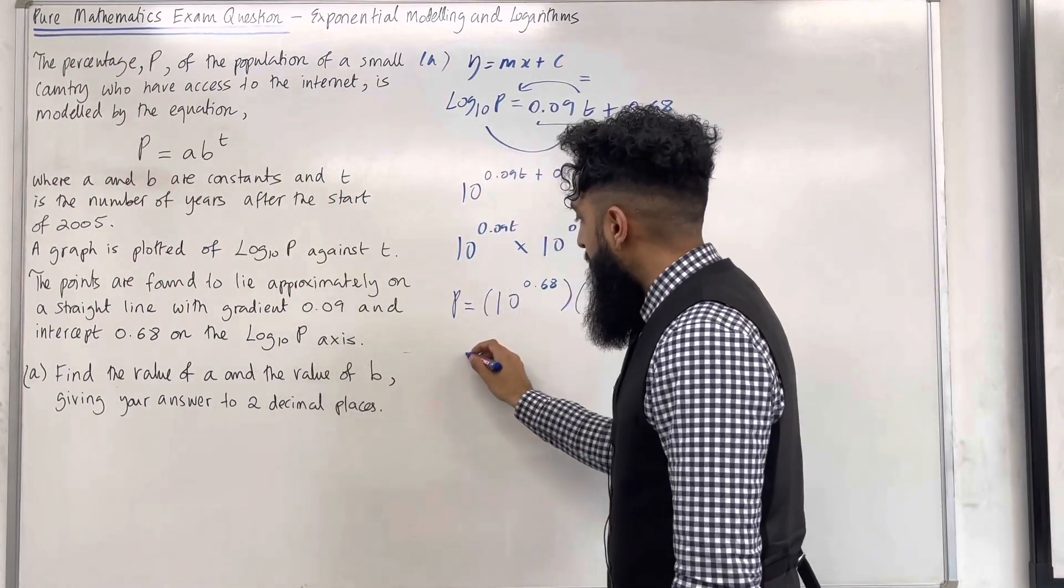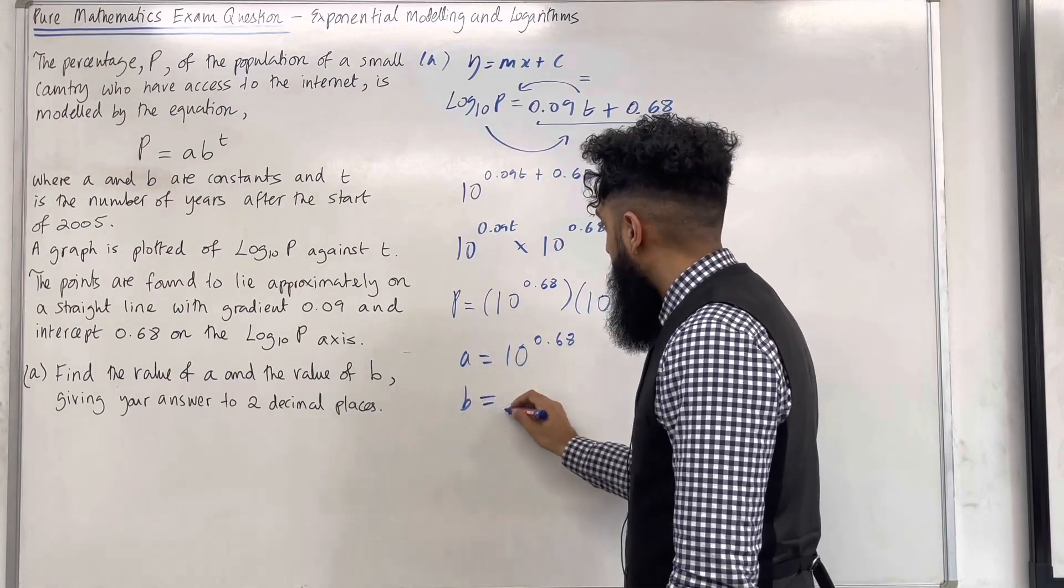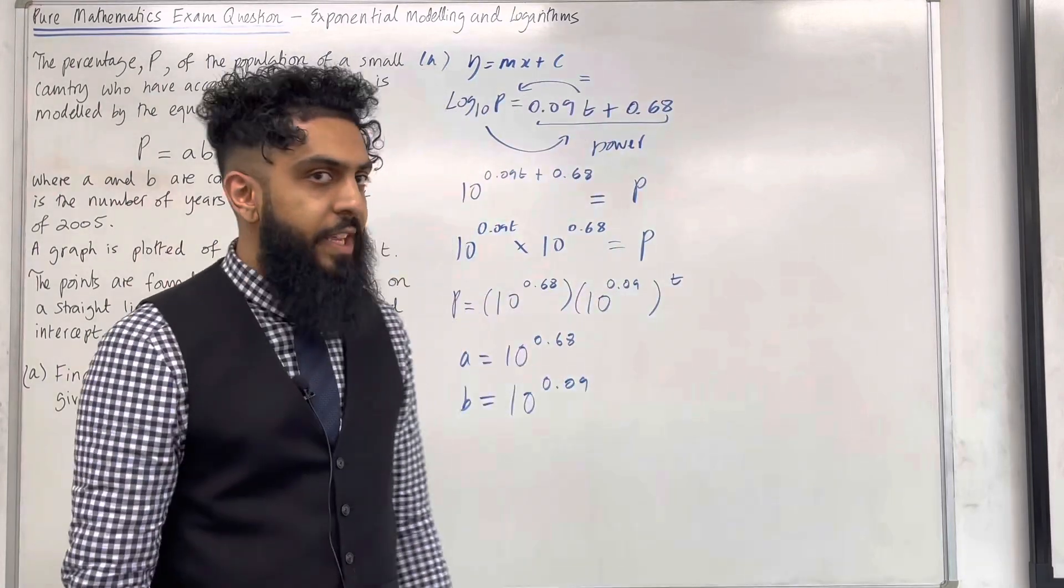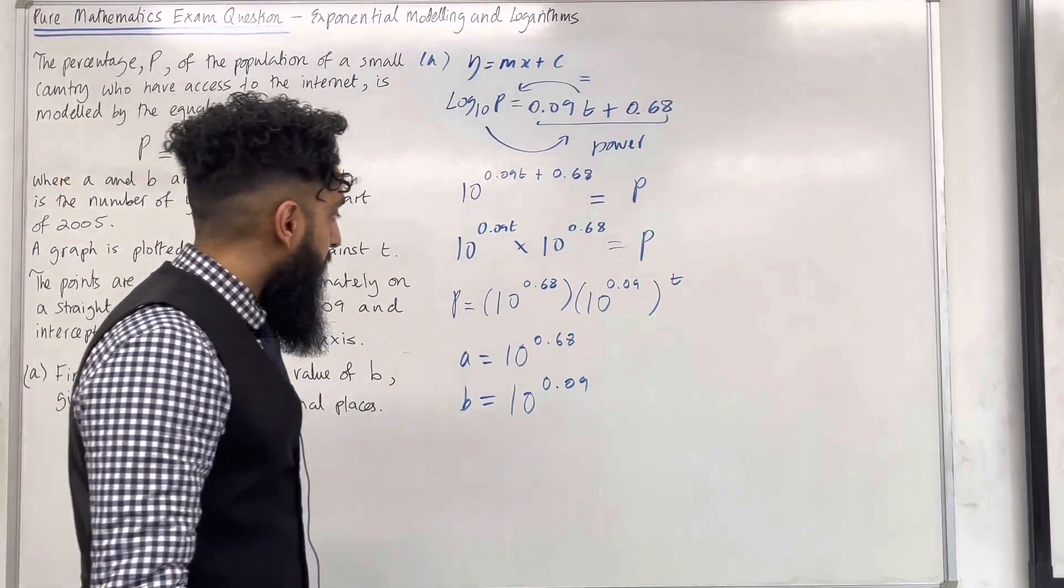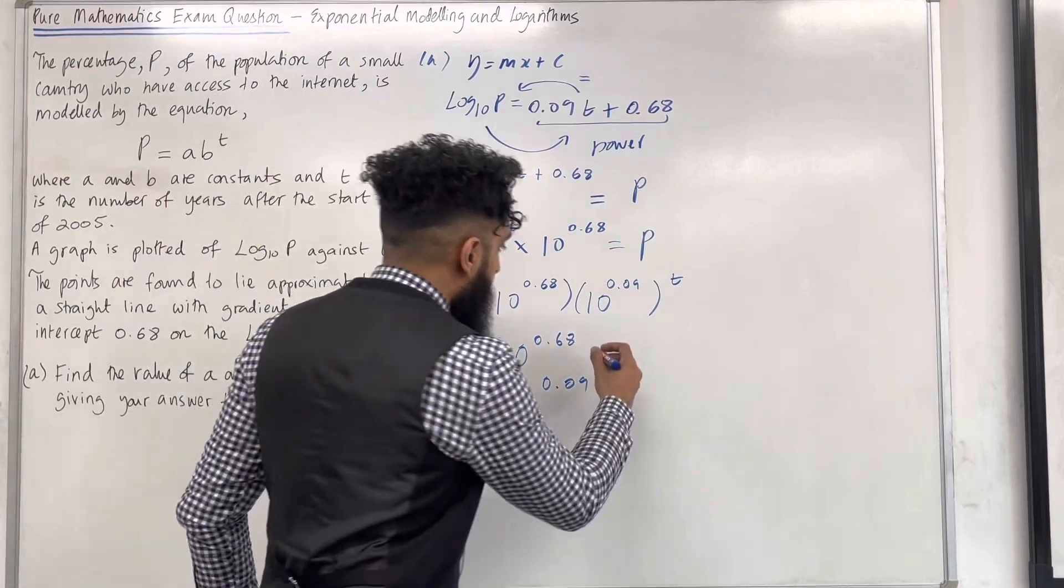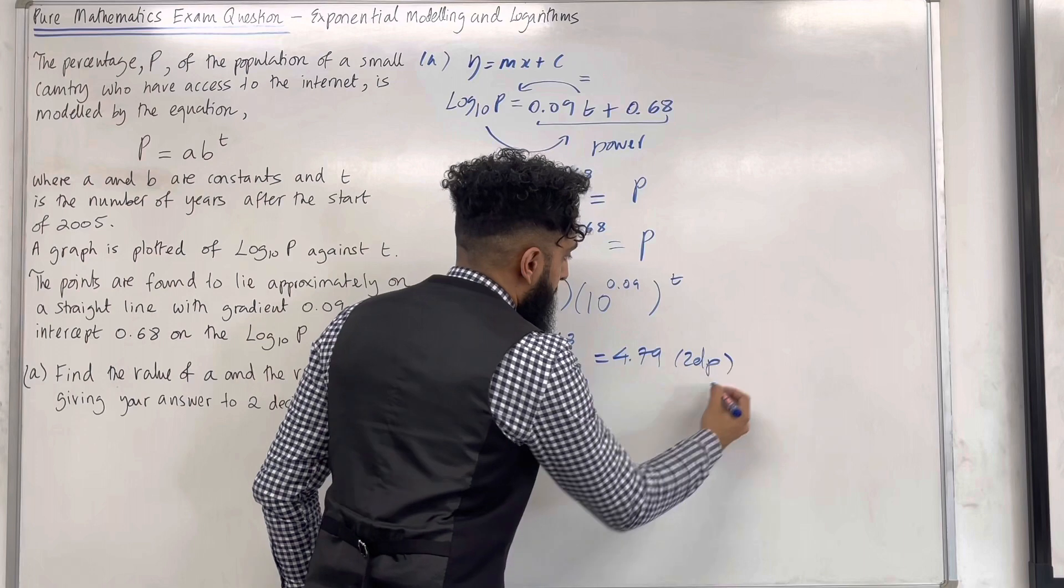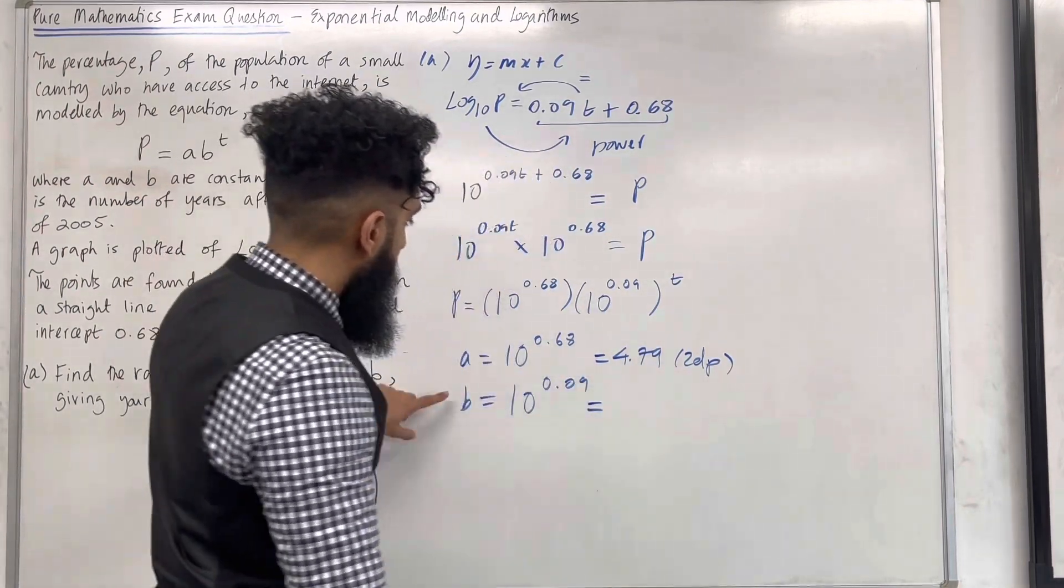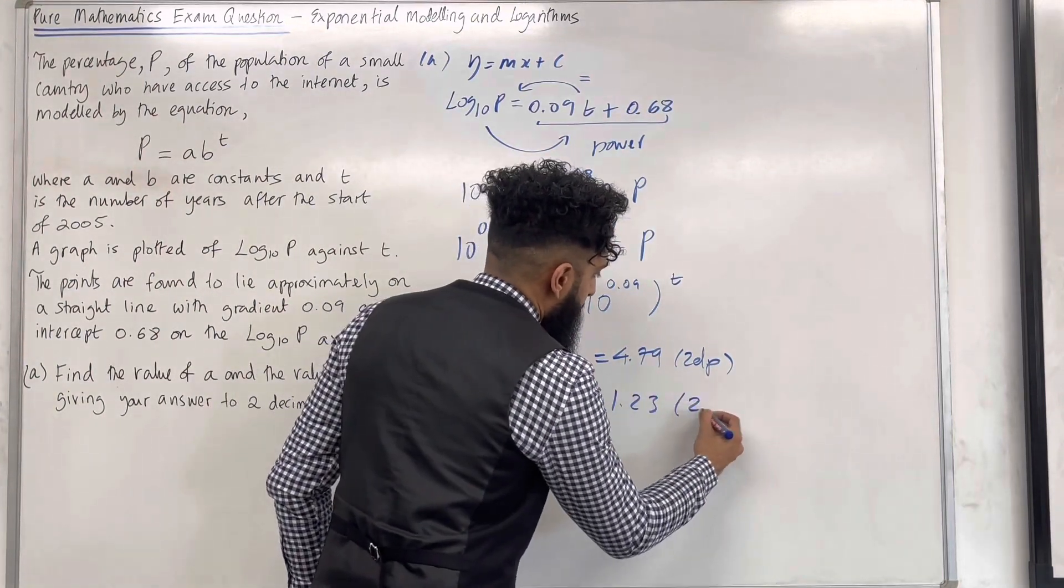So I've got A equal 10 to the power 0.68 and I've got B equal 10 to the power 0.09. All that remains is that I need to round off A and B to two decimal places. So let's start off with A. That would be 4.79 to two decimal places. Next we have B. So that would be 1.23 to two decimal places.